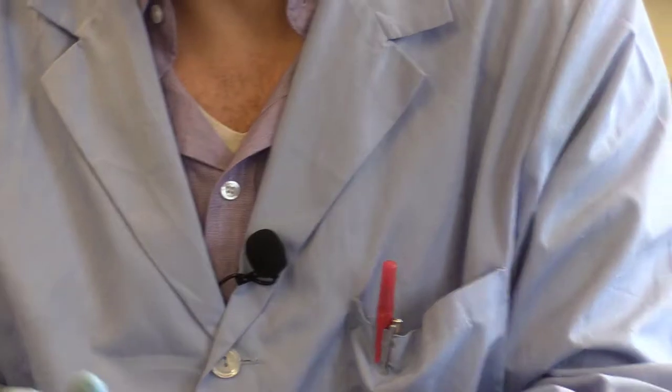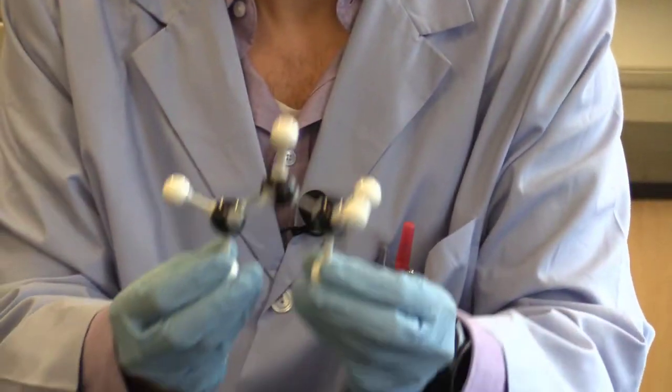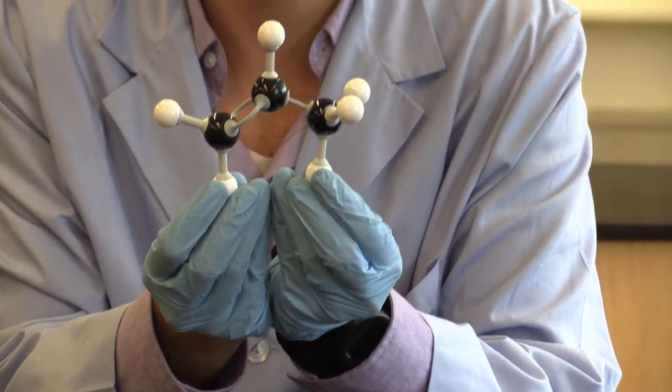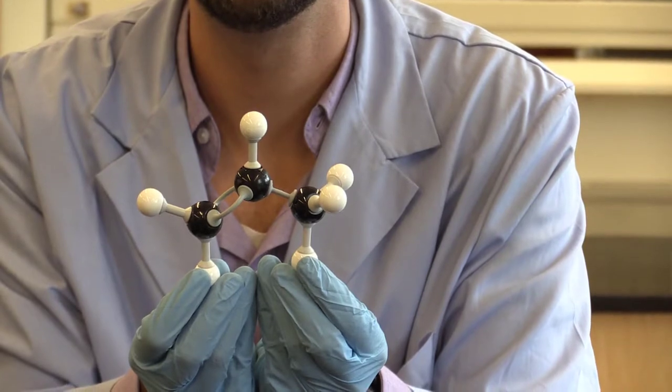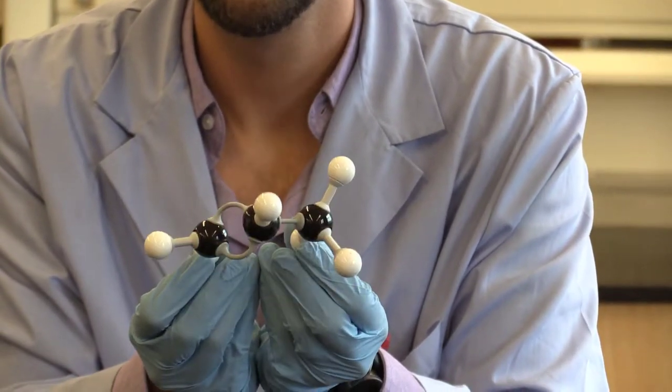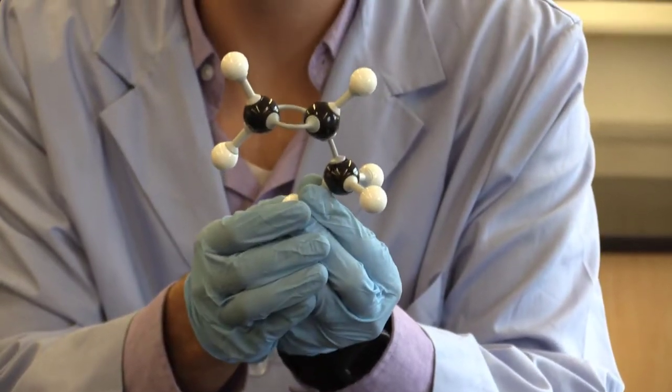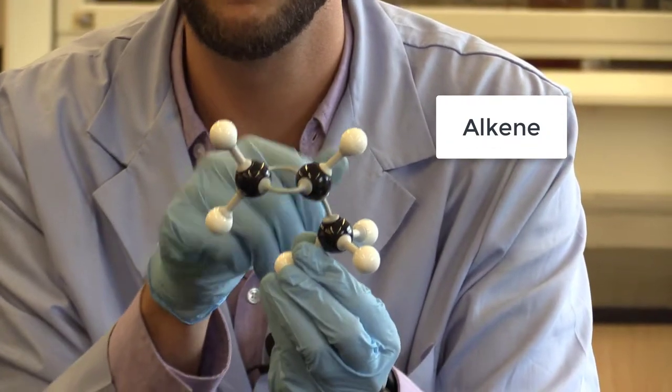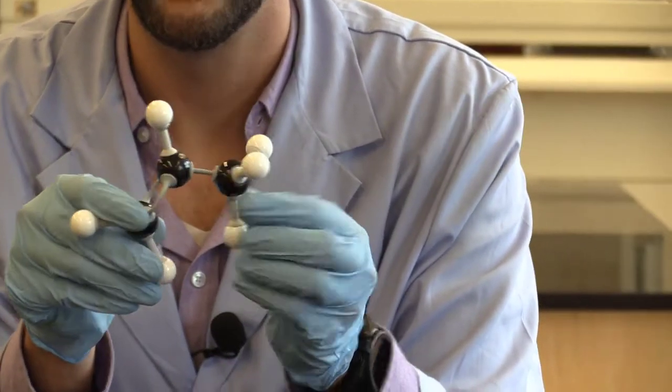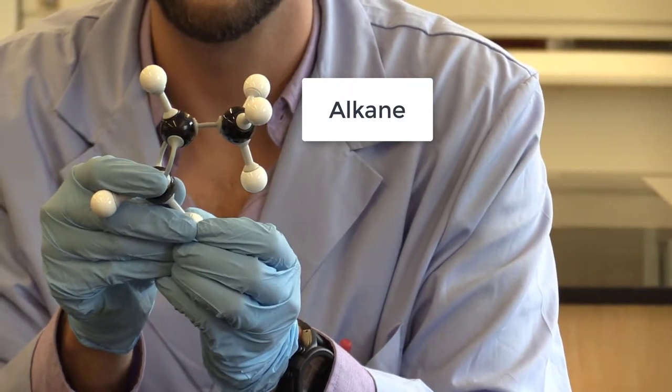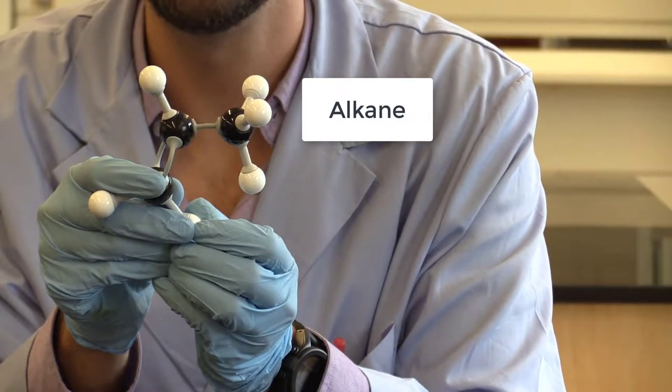Alright, so our first structure. What functional groups do you see? If you said alkene, you would be correct, the double bond in between the two carbons. Remember, the single bonded carbons, alkanes, those are not considered functional groups.